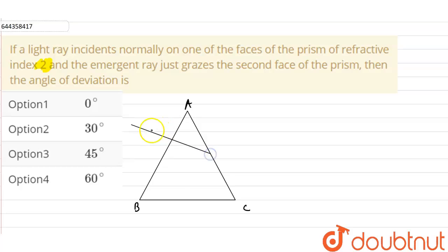Now the light ray emerges from the second surface AC, just grazing the second surface, or we can say just touching the second surface. So this is the refraction.